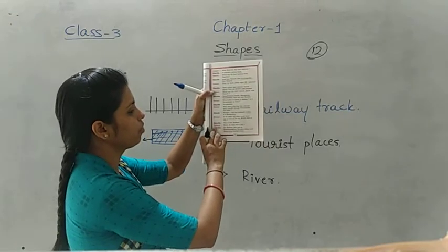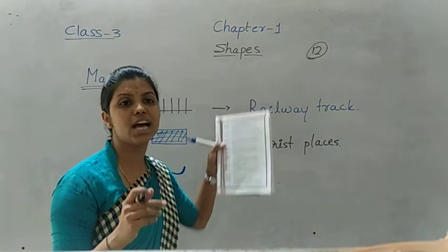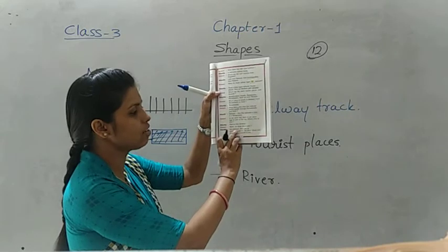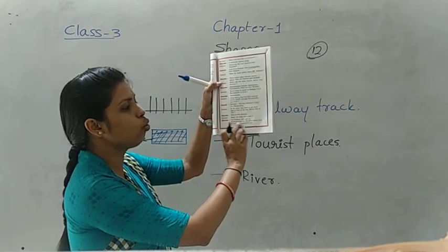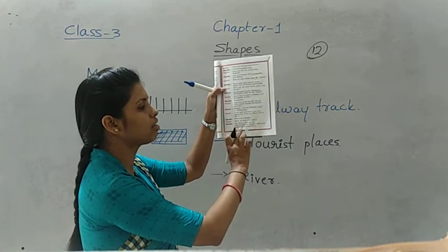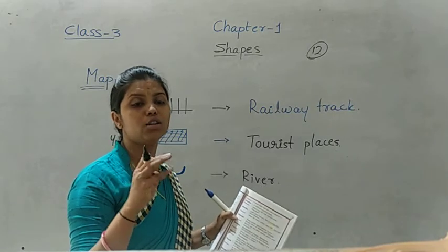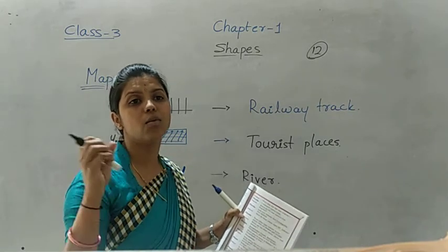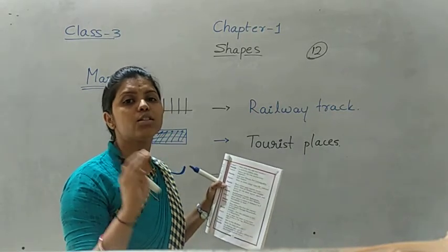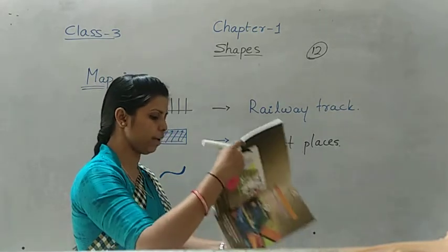Nishan asks: Sister, do these rivers join? Niharika answers: Yes Nishan, they join at Kudala Sangha, the place where Lord Basavanna attained Mukti. So those rivers join at Kudala Sangha.